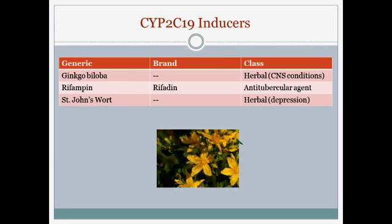For CYP2C19 inducers, ginkgo biloba is an herbal product commonly used for Alzheimer's, dementia, and schizophrenia. Rifampin is a potent inducer. St. John's wort is also available at the grocery store or supermarket without a prescription and is used for depression.